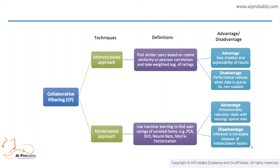Memory-based algorithm approaches the collaborative filtering problem by using the entire database. It tries to find users similar to the active user and uses their preferences to predict ratings for the active user. It uses the nearest neighbor method. The advantages of a memory-based approach are that it is easy to create and results are easy to understand. The disadvantage is that it uses a sparse matrix with a lot of empty data. In model-based collaborative filtering, the algorithm provides recommendations by first developing a model of the user ratings using a probabilistic approach.